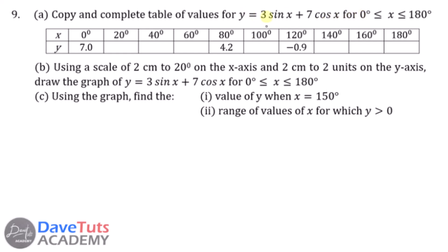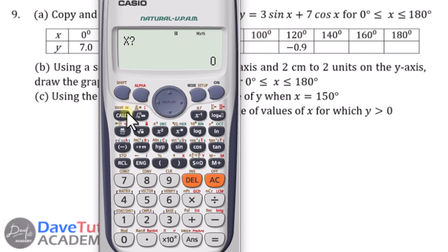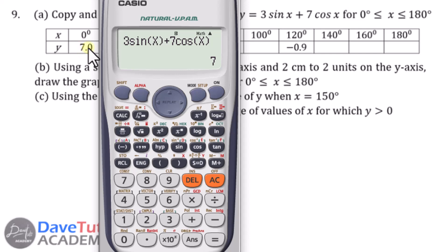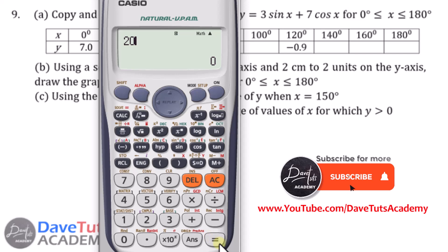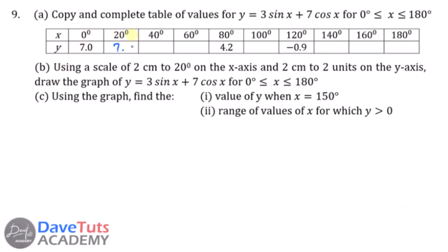There are two methods I'm going to show you. First, we want to use the equation directly. We have 3sin(x) — you get x using alpha close bracket on this type of calculator — then plus 7cos(x), alpha close bracket. You can solve for subsequent values by pressing calc, and it asks you the value of x. When x is 0, the solution is 7, which matches what we have in the table. When x is 20, we get 7.6.